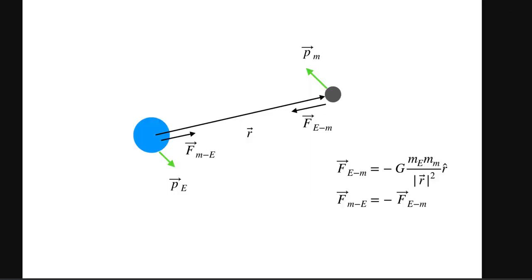So here is the Earth and here's the moon. I can calculate this vector r from the Earth to the moon, and then I can calculate this gravitational force of the Earth on the moon. But now I want to also calculate the gravitational force that the moon exerts on the Earth. Forces are an interaction between two objects, so if the Earth exerts a force on the moon, the moon exerts the exact same force but in the opposite direction. So now the moon has momentum and the Earth has momentum — I'd have to update both momentums. I'd calculate the force on the moon, then calculate the force on the Earth, and then update the momentum. So I'm dealing with two objects.